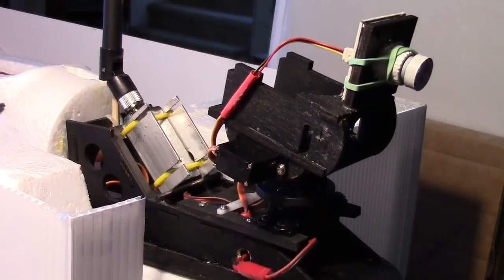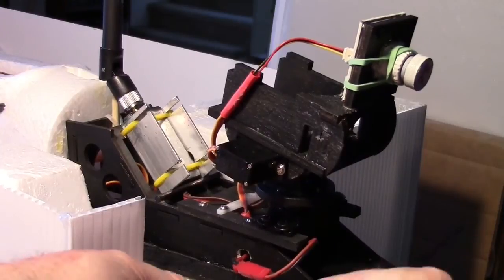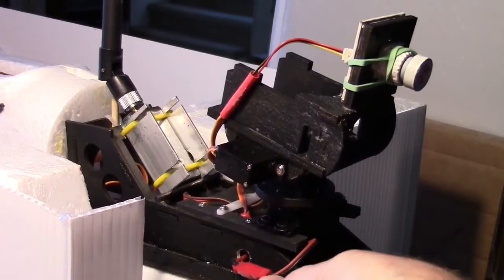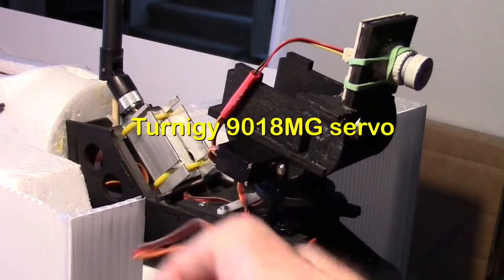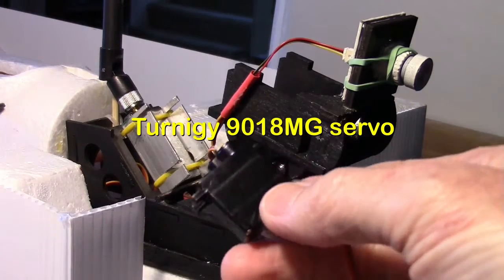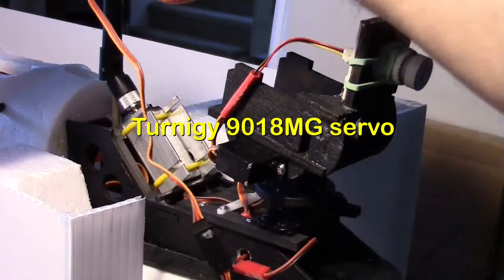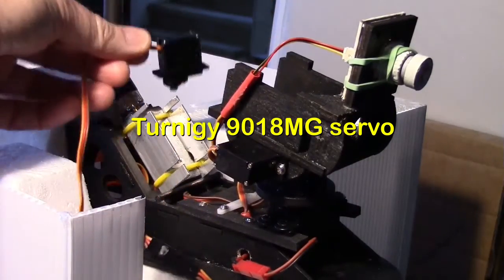So if we go back to the black one, and it's still a Turnigy, and it's still a Metal Gear servo. And this happens to be this 9018 Metal Gear servo. This one right here. Chatters.